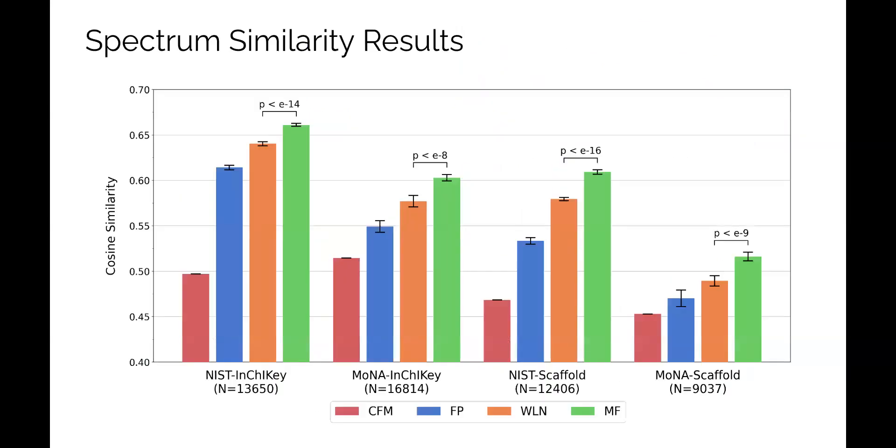On average, MassFormer's predictions are accurate for held out compounds and outperform existing approaches for spectrum prediction. We compared our model to competitive fragmentation modeling, or CFM, which is a commonly used probabilistic model for spectrum prediction, and two deep learning methods. The fingerprint model, or FP, which uses a chemical fingerprint representation of the input structure, and the WLN model, which uses a graph neural network representation of the compound.